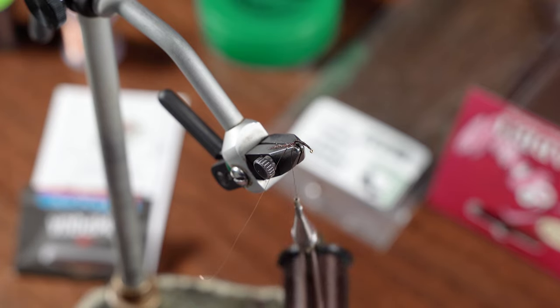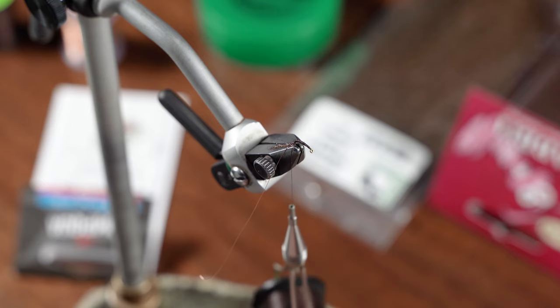Now I'm using some rabbit dubbing. This is just a standard brown color. You could do this fly in olive or gray or black.